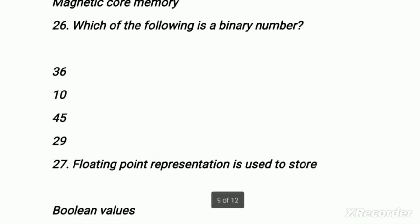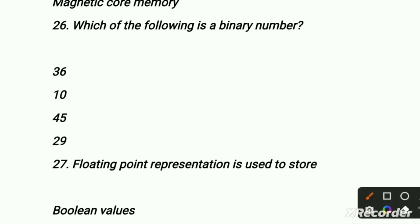Which of the following is a binary number? Binary number means on-off system: 0 and 1. First option is 36, second is 10, third is 45, fourth is 29. Since binary means only 0s and 1s, the answer is 10 — second option.